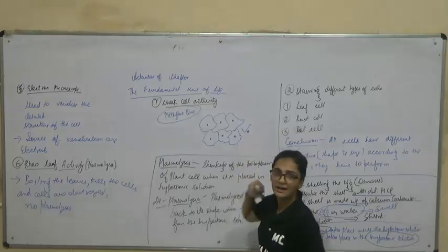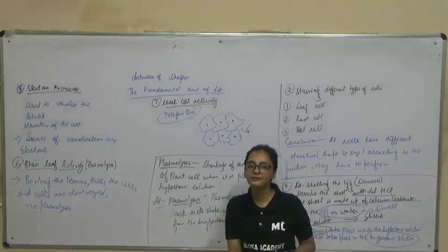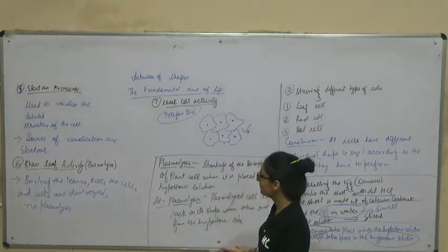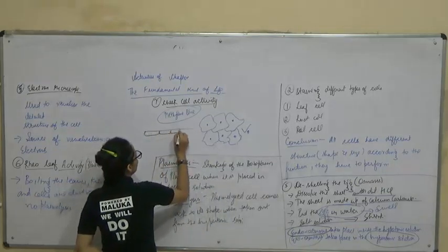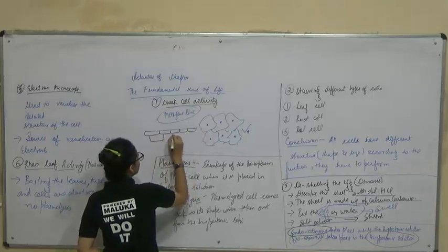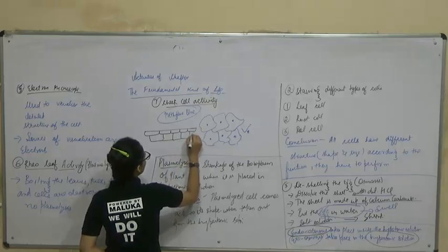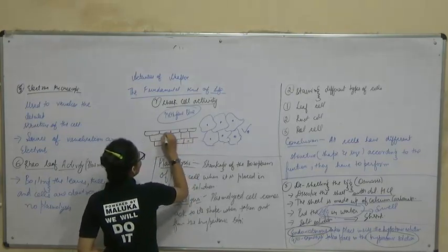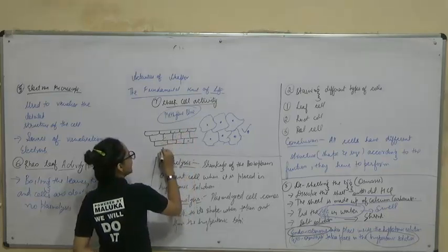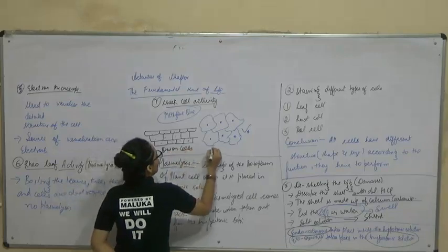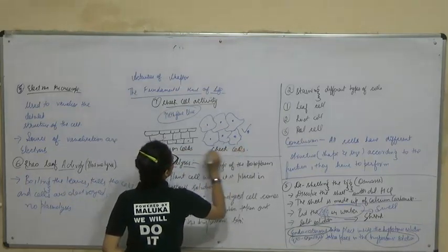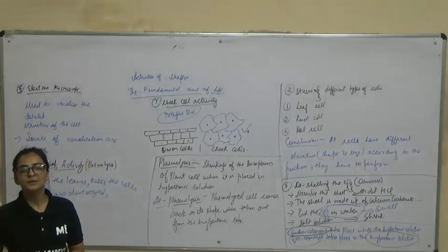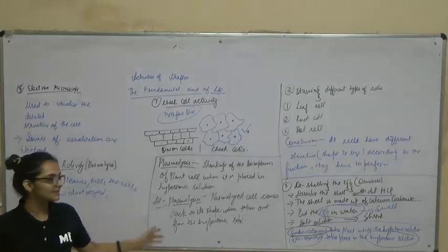This is an animal cell, and we can compare it with the onion (plant) cells. Onion cells were tightly packed, had a proper fixed shape, and had a cell wall, so they were compactly arranged. Cheek cells, by contrast, are irregularly shaped and loosely arranged — showing the difference between plant and animal cells clearly.